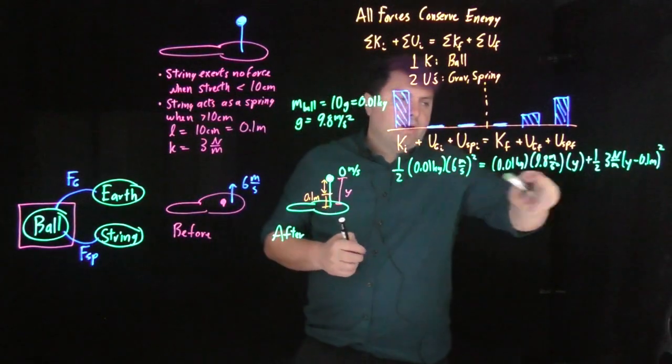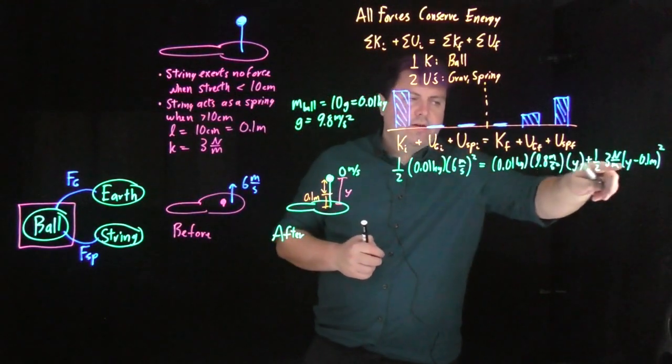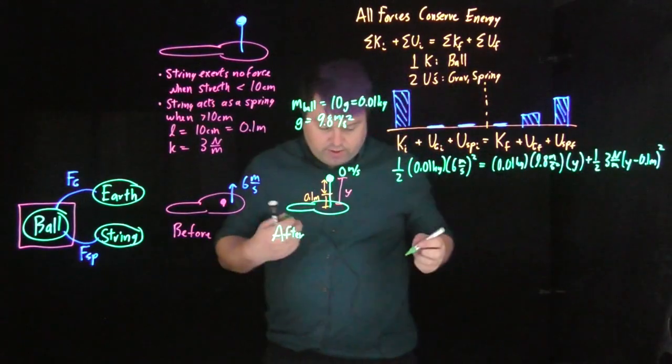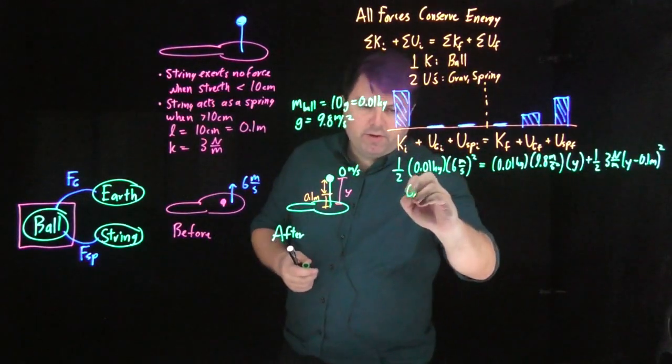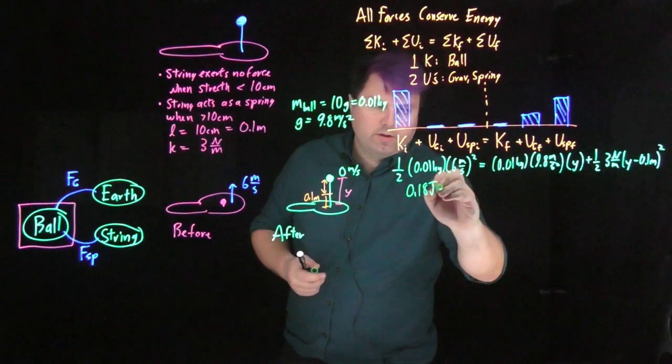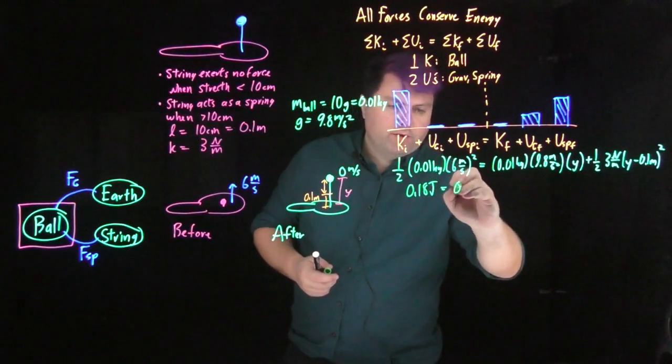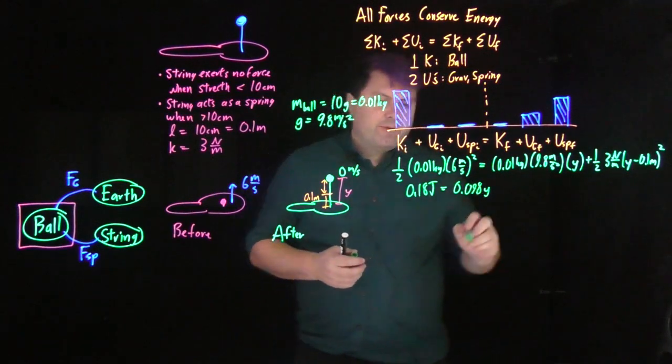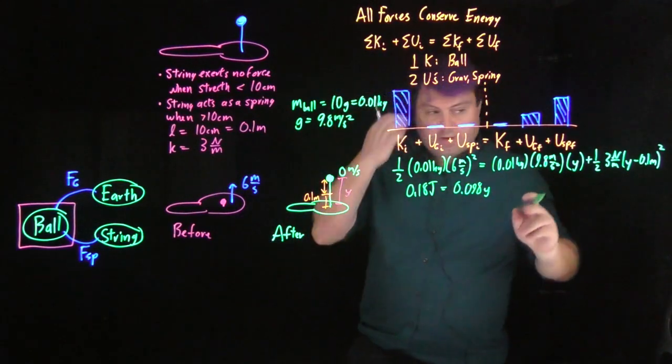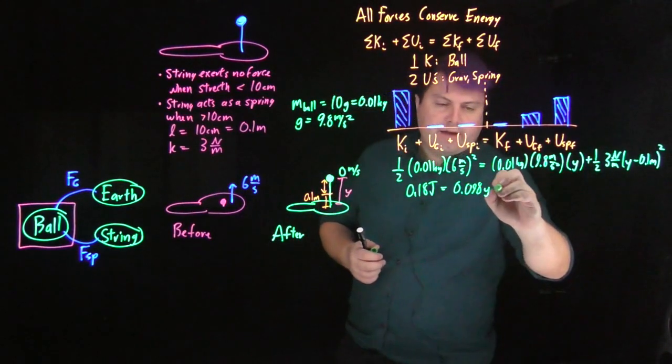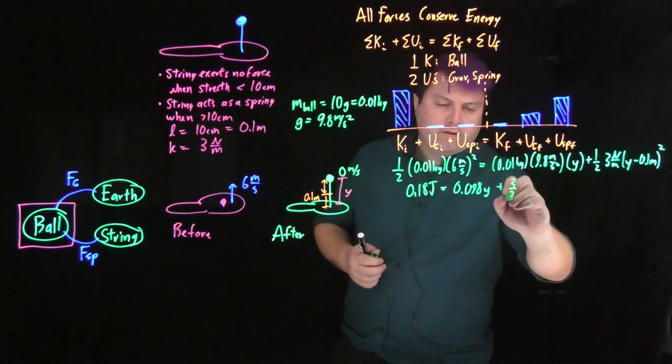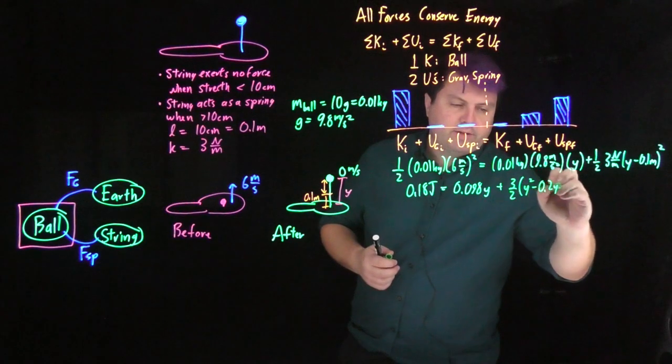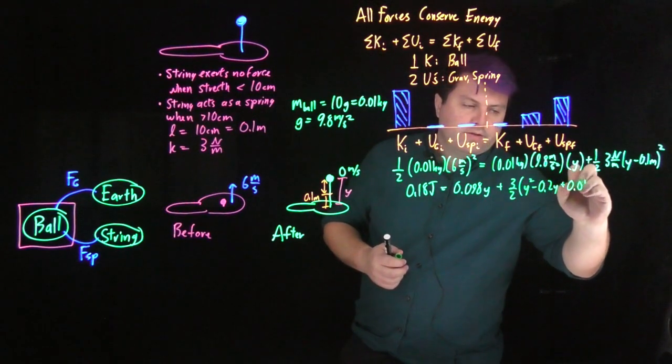All of this, we have just one unknown y, and then the rest we have known. So we can start solving this. All of this becomes 0.18 joules. This becomes 0.098y. And then we have 3 halves times y minus 0.2y squared minus 0.2y plus 0.01.